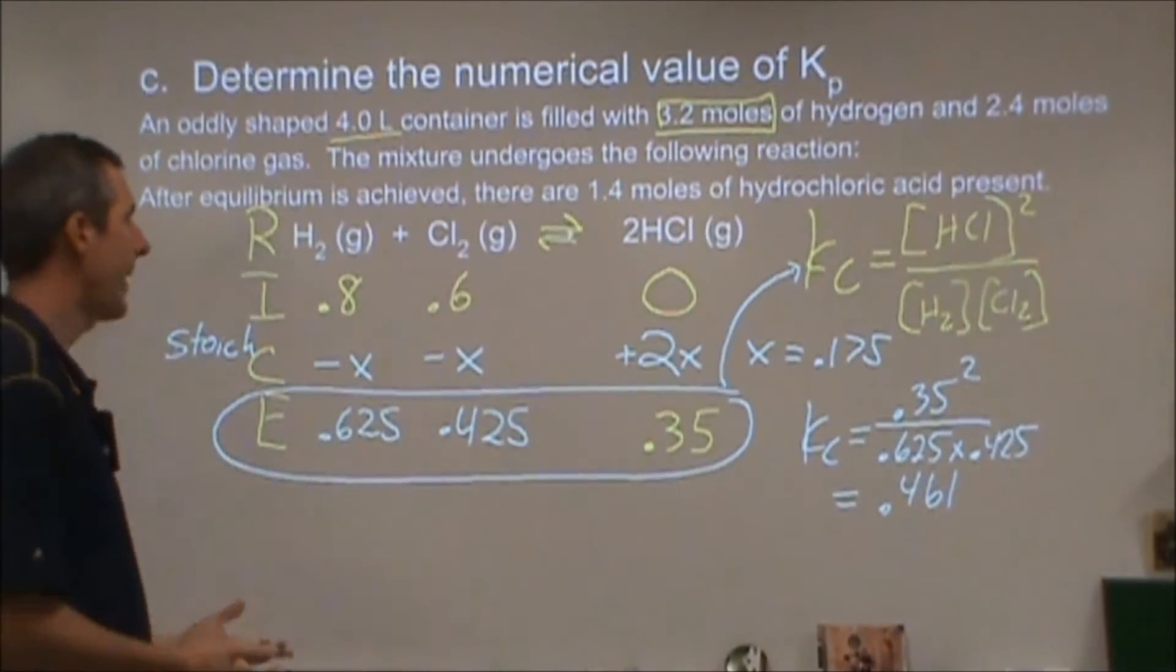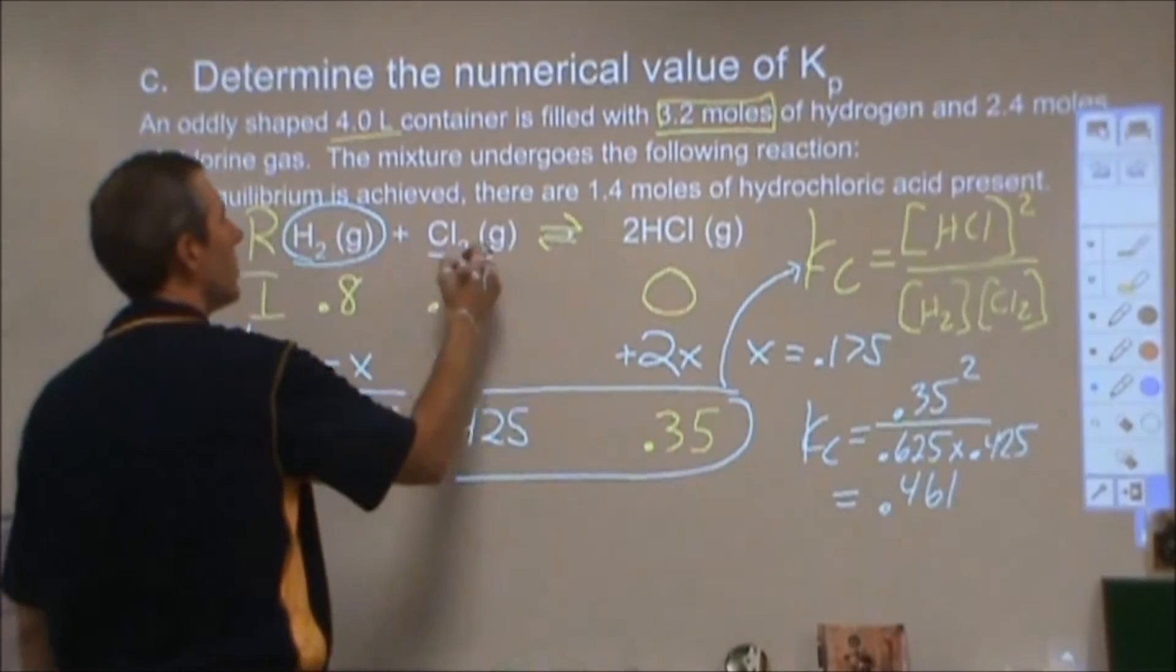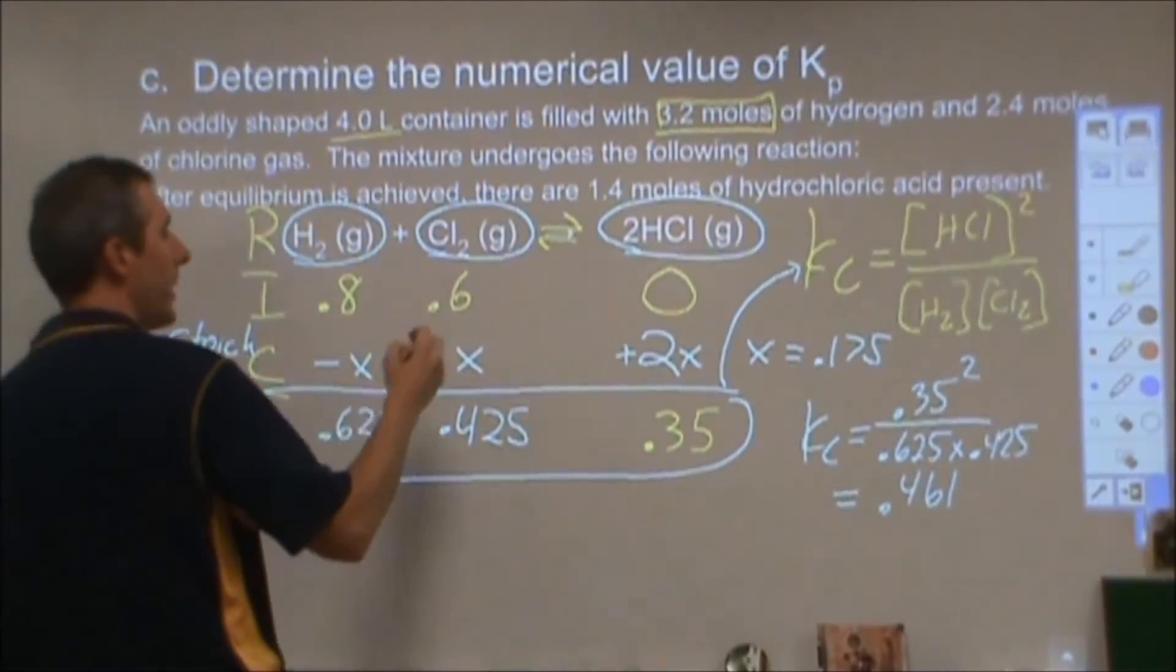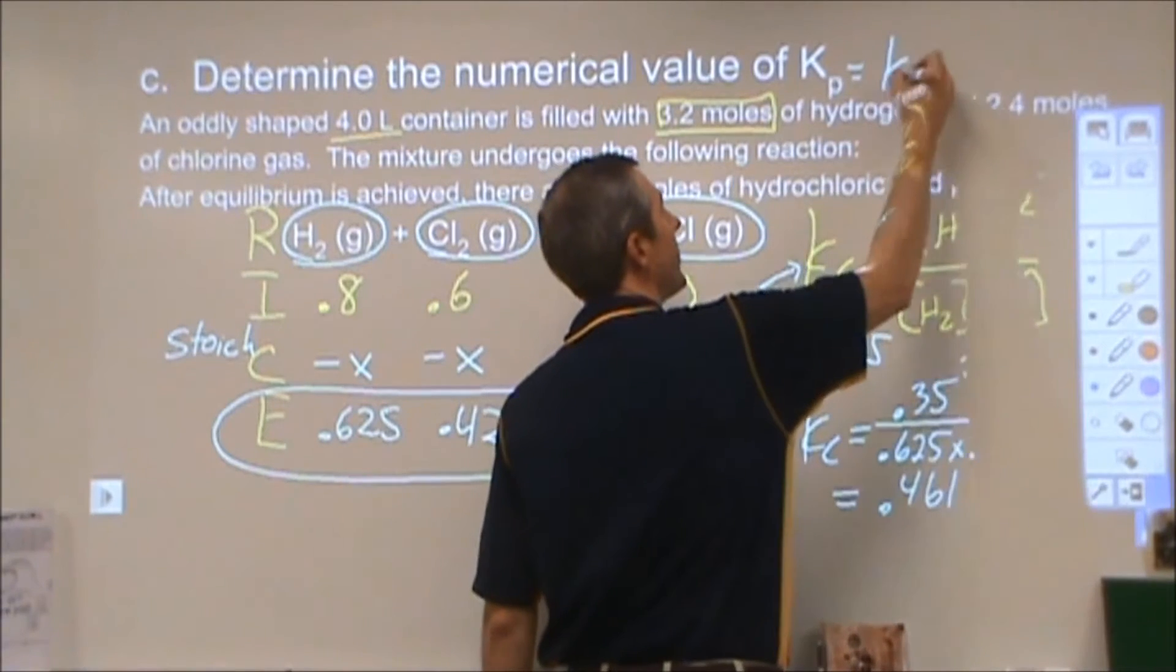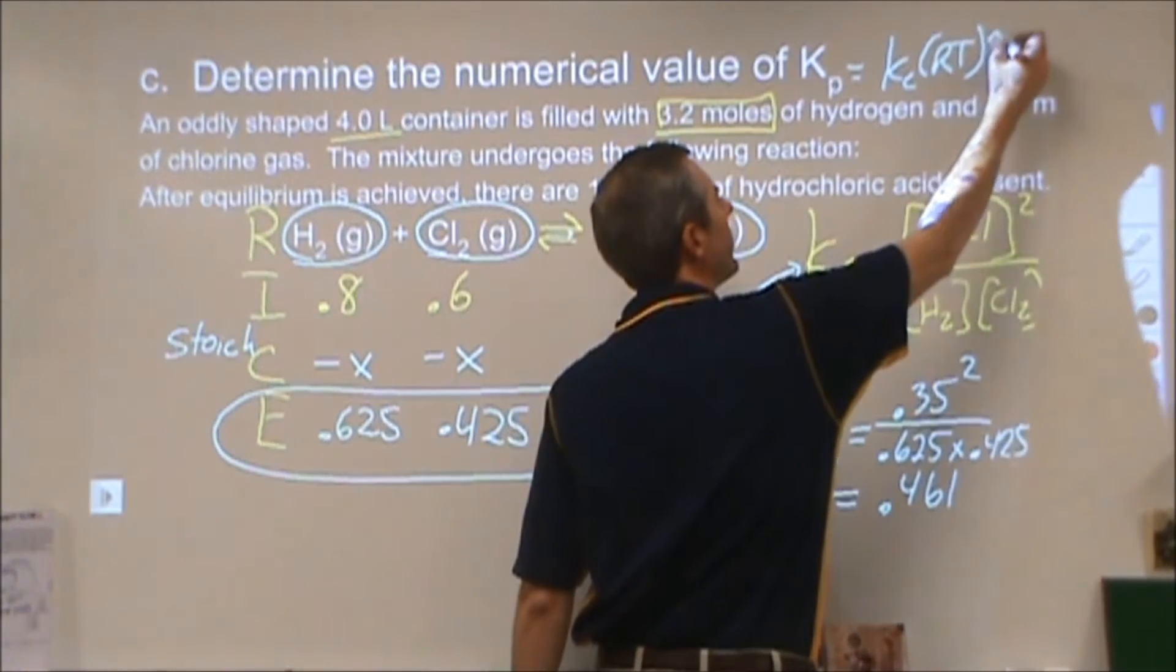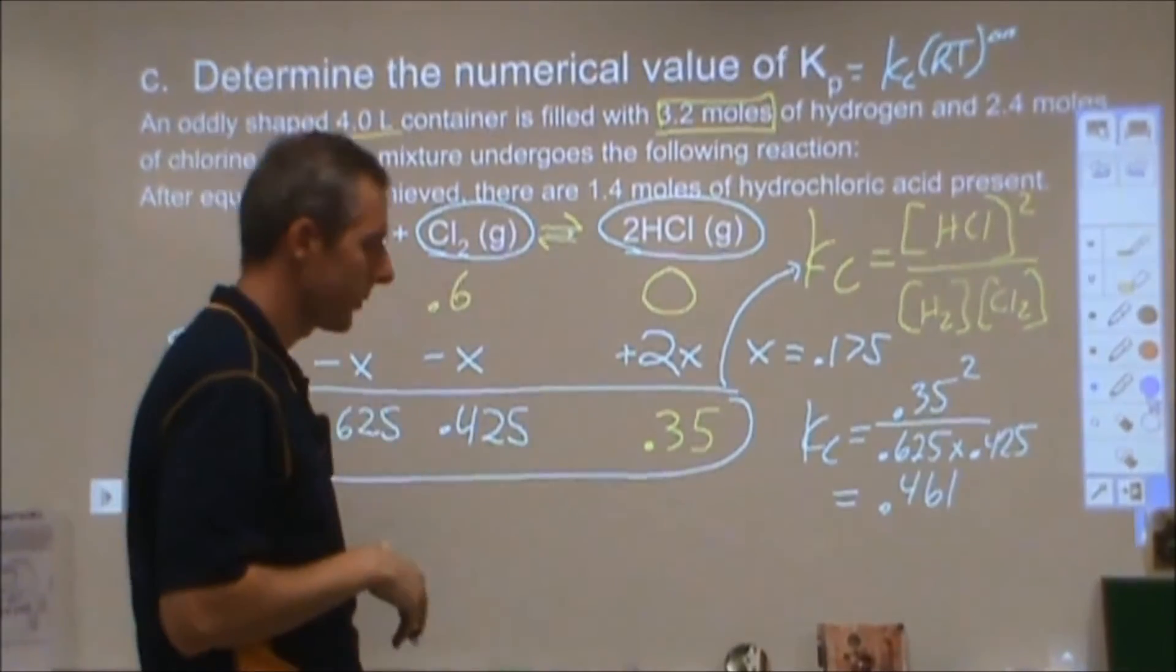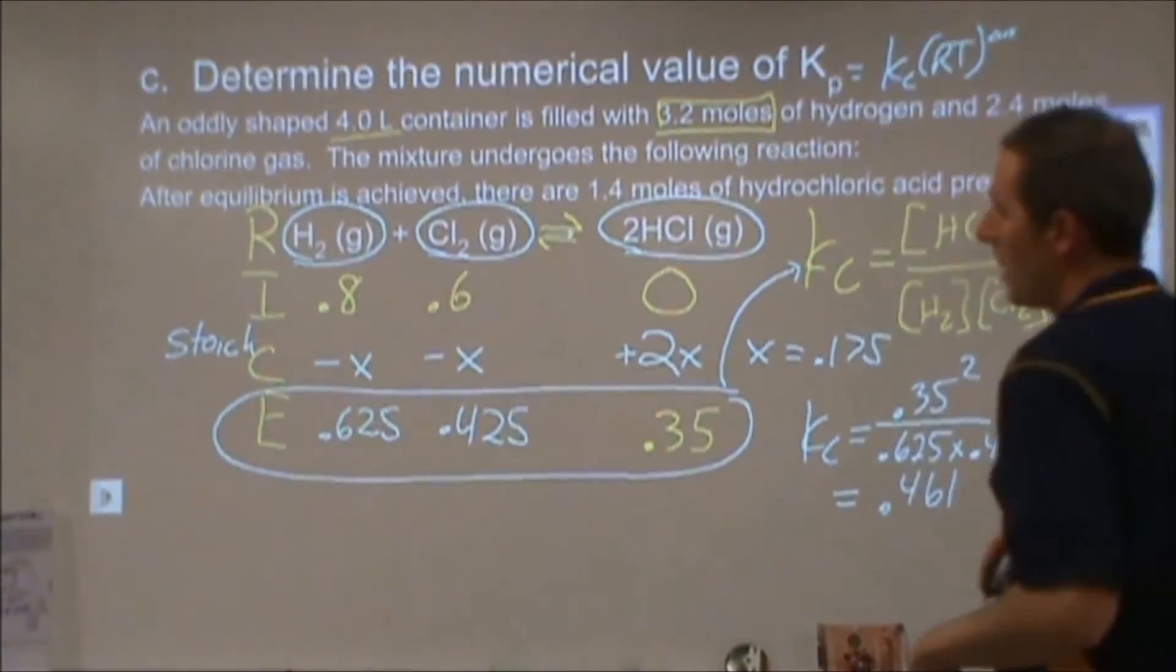there is an equation to convert that. However, given the fact that this is two moles of gas turning into two moles of gas, or two molecules of gas turning into two molecules of gas, my delta n, Kp equals Kc times RT to the delta n, and it's either delta n or negative delta n, I can't remember which at the moment. I think it's delta n for this one. Anyway, this is the change in molecules of gas.